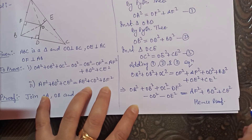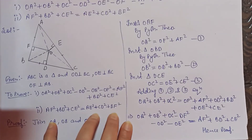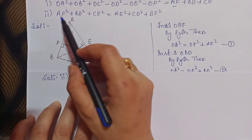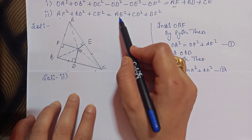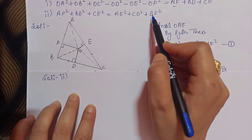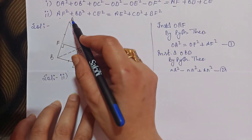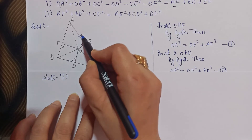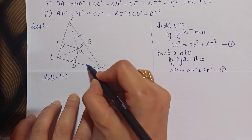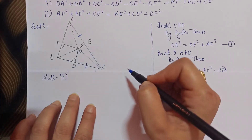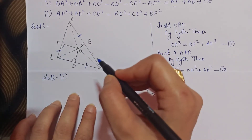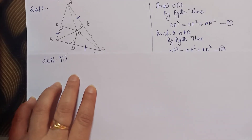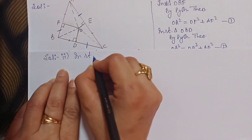اب second part proof کریں گے: AF² + BD² + CE² = AE² + CD² + BF²۔ AE² والا triangle AOE میں ہے، CD² والا triangle ODC میں ہے، اور BF² والا triangle OBF میں ہے۔ یہ پہلے والے triangles سے مختلف تین triangles ہیں۔